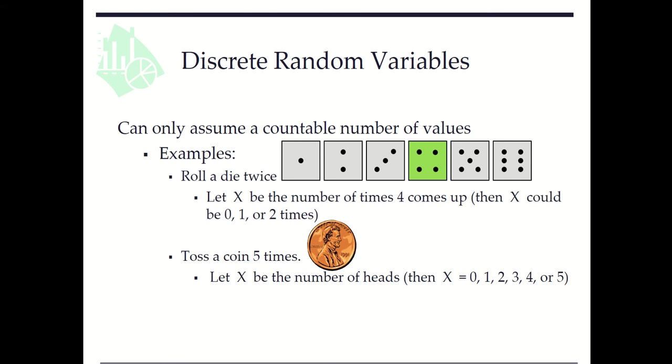In another example, if we toss a coin five times and let x be the number of heads, then x could be 0, 1, 2, 3, 4, or 5. Here x is also a discrete random variable.